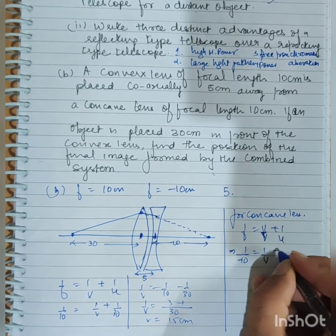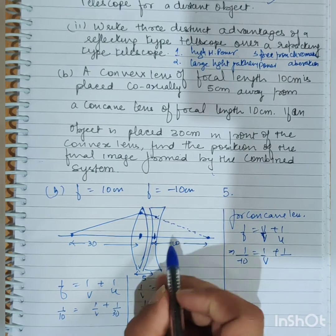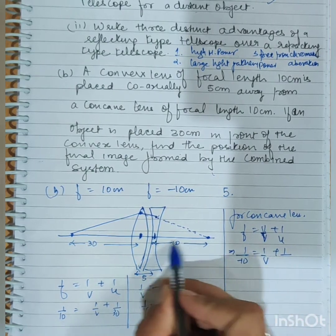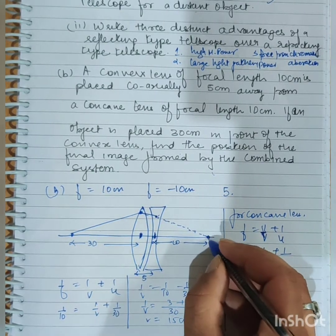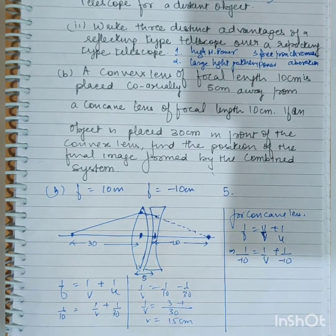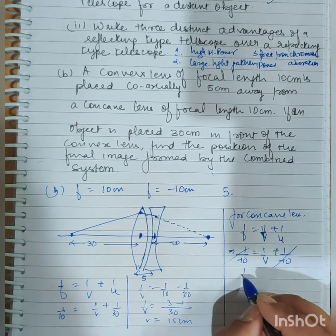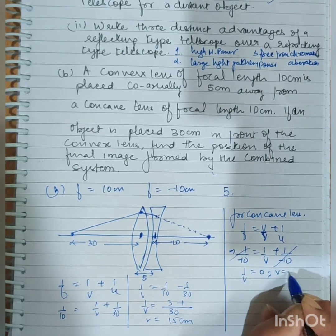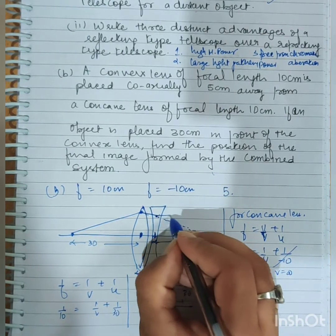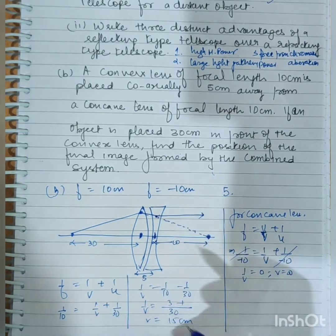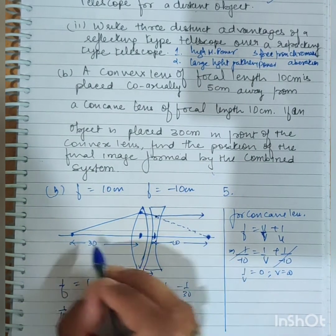Where u is minus 10 because this is a virtual object. When it is virtual, it is minus 10. So this cancels, 1 by v is 0, and v is infinite. Here the ray is parallel.